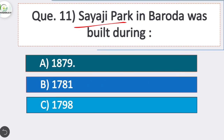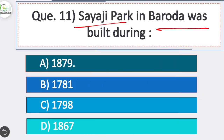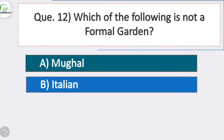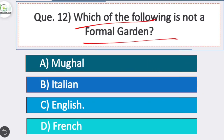Question 11: Sayaji Park in Baroda was built during — option A is correct — 1879. Question 12: Which of the following is not a formal garden? Option C is correct — English Garden, because this plan is not symmetrical and natural beauty is present in it.